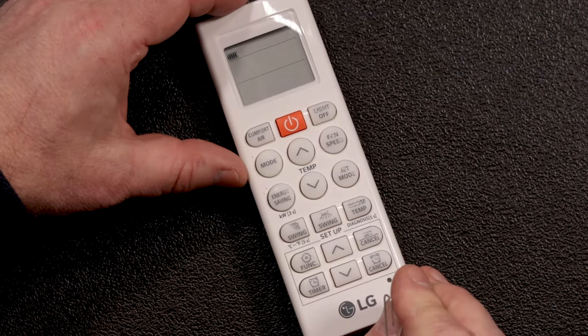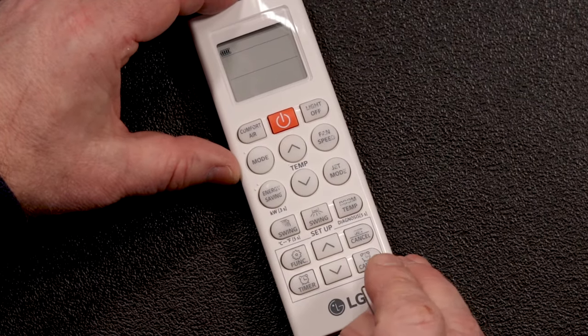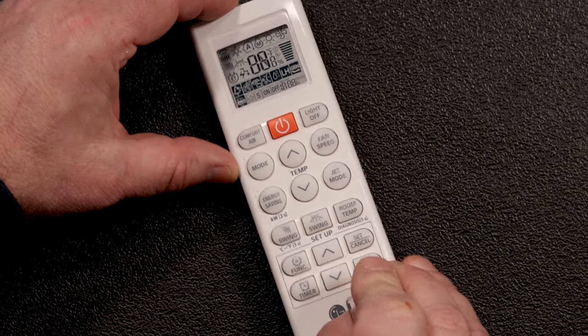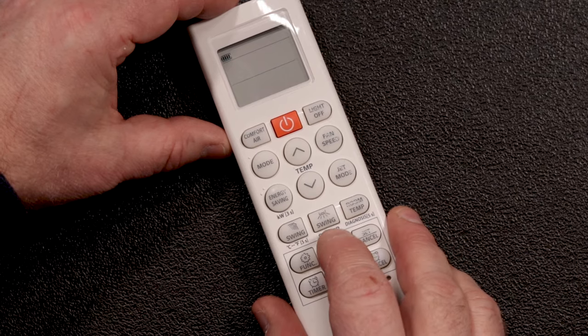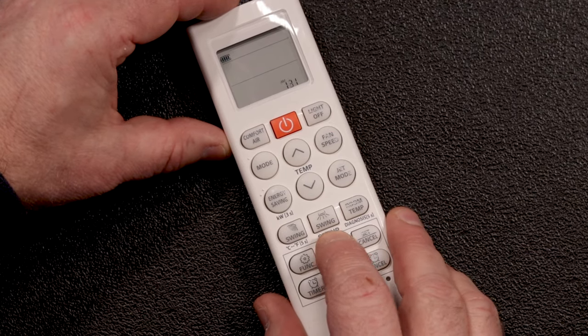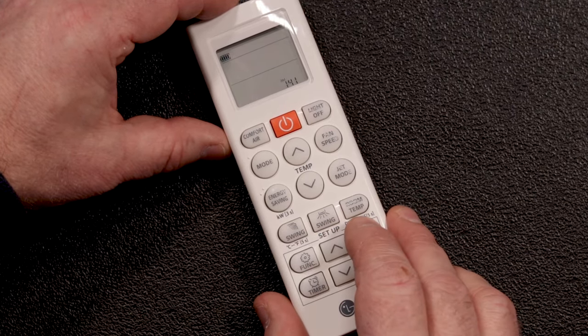To set the time, use a paperclip to depress the small button in the lower right. Use the lower pair of up and down buttons to adjust the time, then press the set button when you're done.